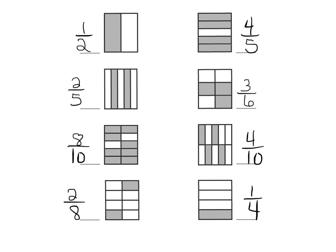Now, ideally, students are going to be looking for relationships. We can see, right here, these guys are related, because one times three and two times three gives us three-sixths. One times three is three, two times three is six. We also want students to see that this makes sense — if I were to move this piece here and this piece here, we would get a completely shaded side right here. So that answer makes sense.